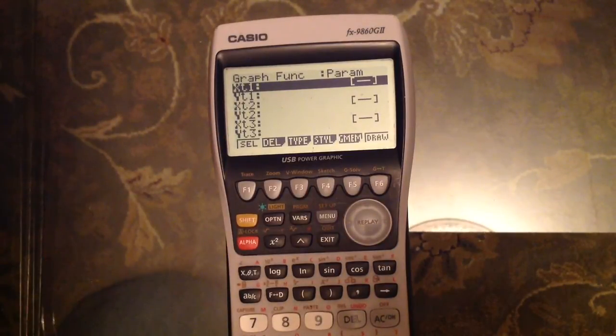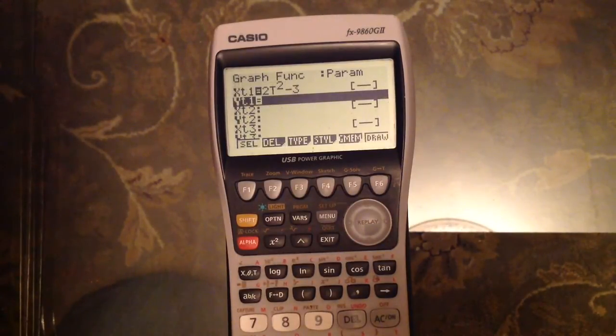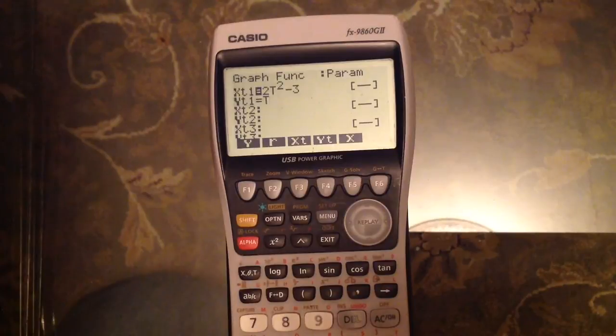Then all you need to do is enter the equation for your parametric graph using this button, XthetaT. It's going to take the T rather than the X's, and we can then enter our equation. So let's go with something like 2T squared minus 3, and T minus 2.